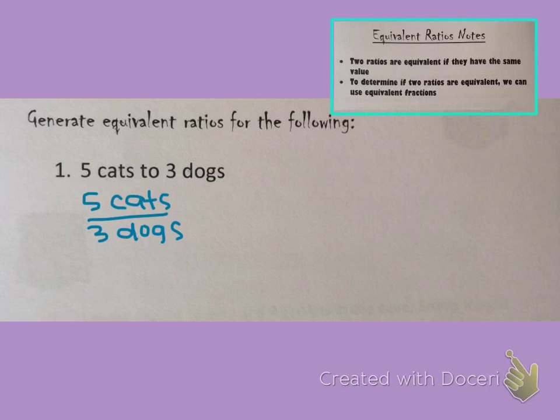Remember to come up with an equivalent fraction, we simply multiply both the numerator and the denominator by the exact same number, or we divide the numerator and the denominator by the exact same number, and we will have an equivalent fraction. As I'm looking at the numbers in this ratio, 5 and 3, there's nothing that goes evenly into both 5 and 3, so I don't want to choose the division route. I'm going to multiply.